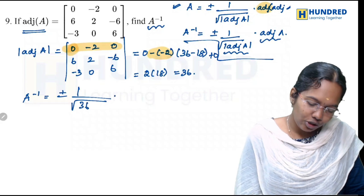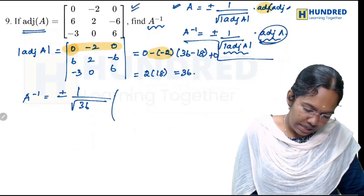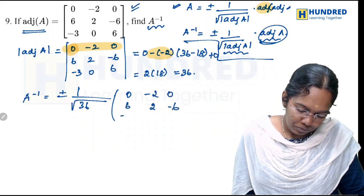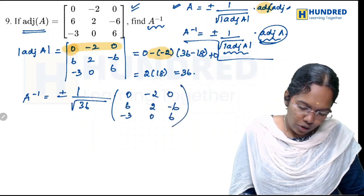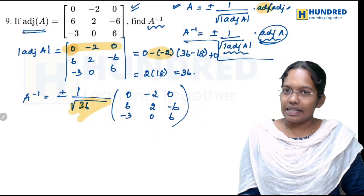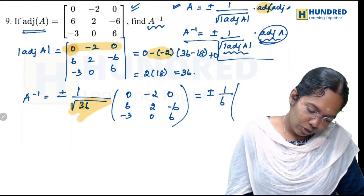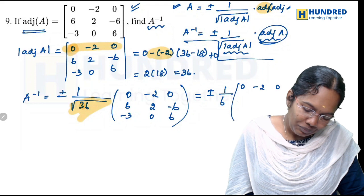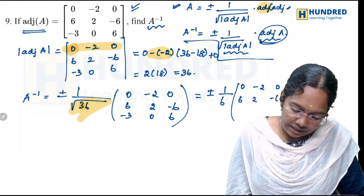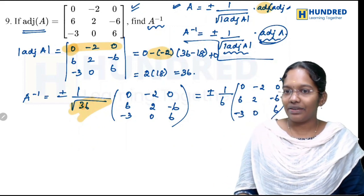So determinant of adjoint A is 36. We substitute into the adjoint A formula. The adjoint A matrix is: 0, minus 2, 0, 6, 2, minus 6, minus 3, 0, 6. The root of 36 is 6. So the answer is plus or minus 1 by 6 into the matrix: 0, minus 2, 0, 6, 2, minus 6, minus 3, 0, 6. This is the required A inverse matrix.